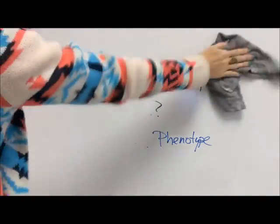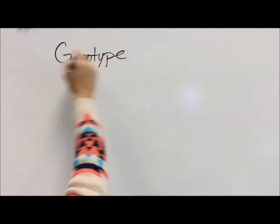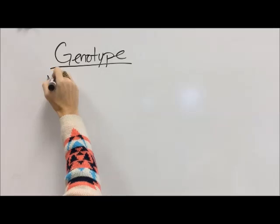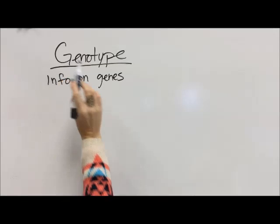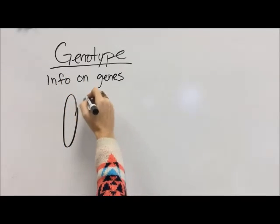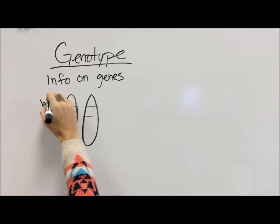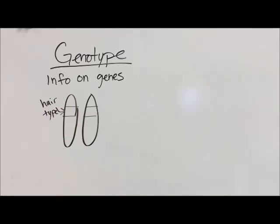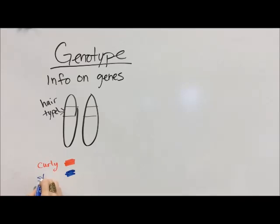These two things work together to give us basically our individual characteristics. Genotype is the information that is on your genes — keeping in mind that it means type of genes. We're going to go back to our picture of our chromosomes with our little gene here, and we know that there is a gene for hair type, like whether it's curly, which is one type of allele that we can have, or we could have another type of allele that would give us straight hair.